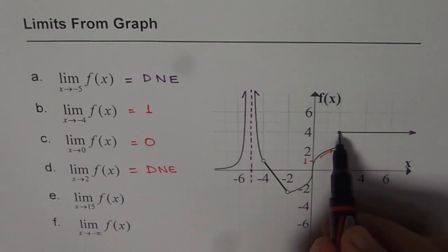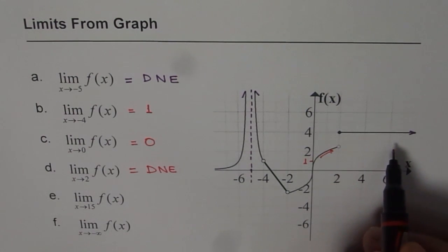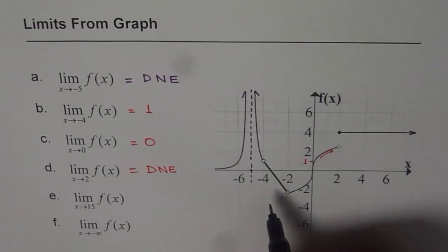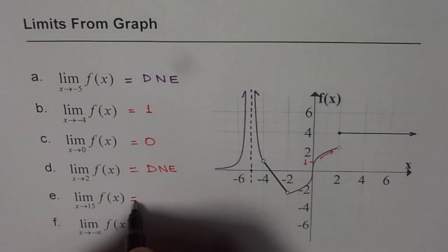So even at 15, it will be a continuous line which will have a value of 4. So the limit as x approaches 15 is 4.